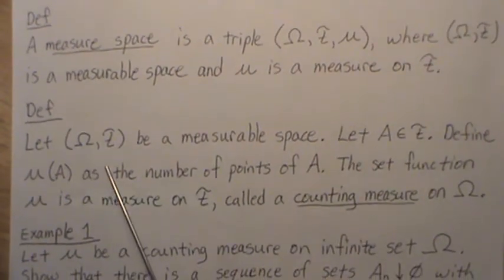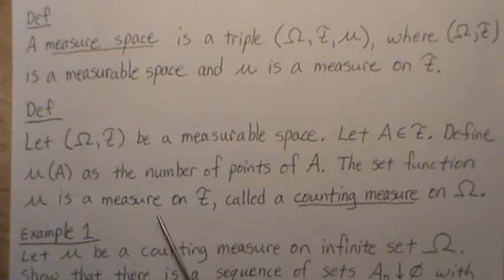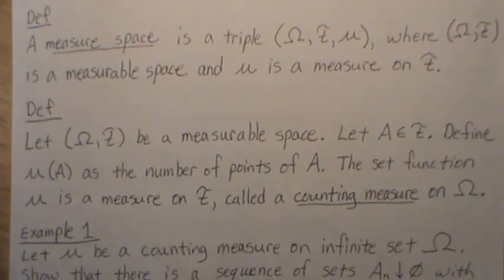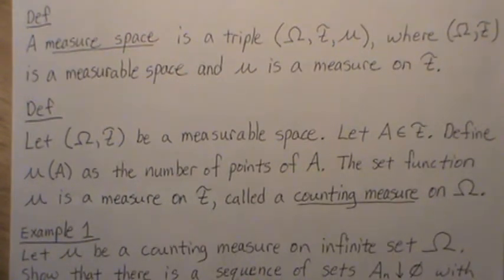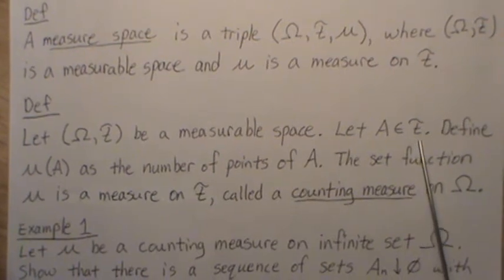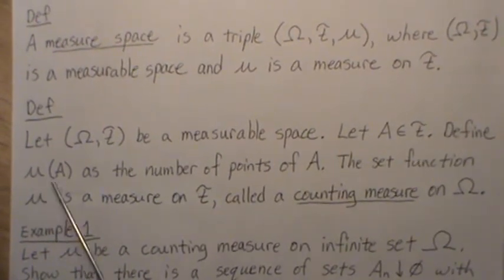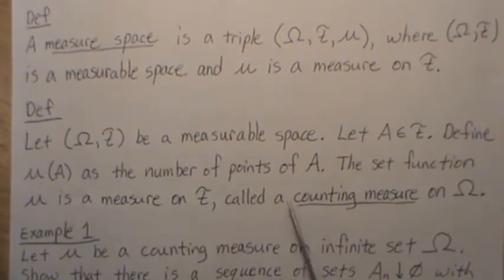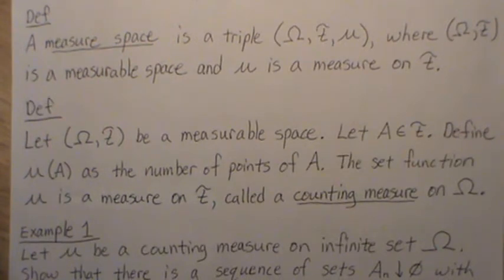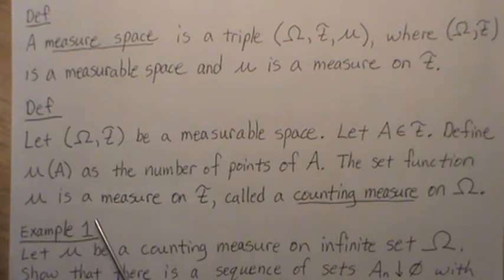Another definition: let (Ω, F) be a measurable space, let A be an element of the sigma field F. Define μ(A) as the number of points in the set A, then the set function μ is a measure on F called the counting measure on Ω.